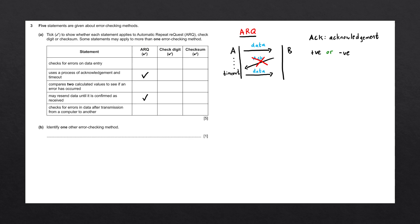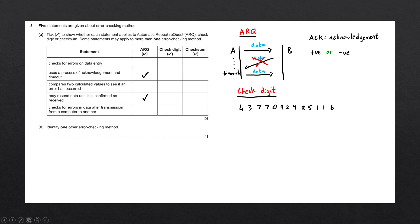The next error checking method is check digits. Check digit is used when entering data into a computer — the most common example is entering barcodes. If a barcode scanner doesn't work, we might manually enter the barcode, but it's a long number and easy to make mistakes. For this reason, we use a check digit to ensure the data entered is correct without knowing what the correct data is. We apply an algorithm using all the digits to come up with a single number — for IGCSE we don't need to know the exact algorithm.